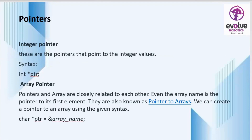The next type is array pointers. Pointers and arrays are closely related to each other — the array name itself is a pointer to its first element. They are also known as pointers to arrays. We can create a pointer to an array using the syntax: data type, pointer variable, equals ampersand array. Every variable resides in a memory location, and every memory location has an address accessible using the ampersand operator.